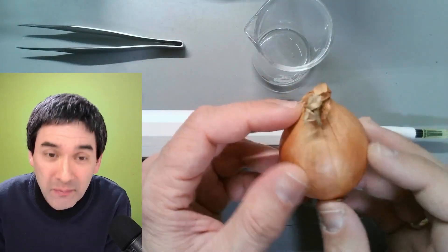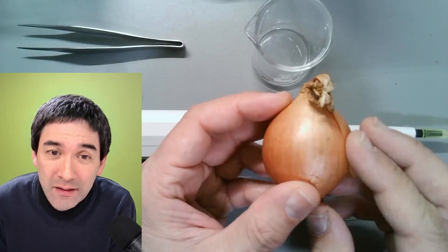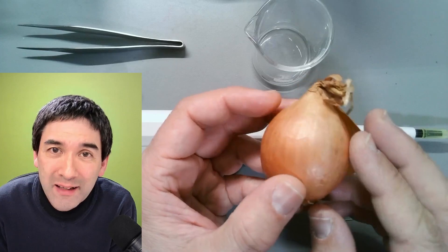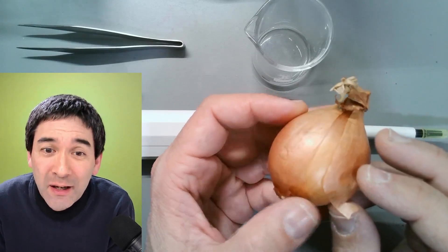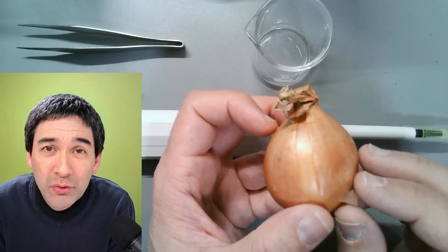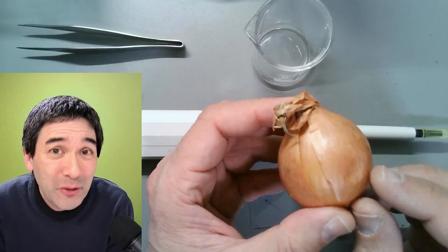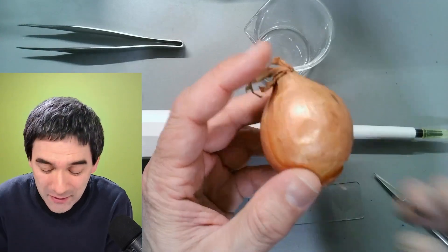I've got a little onion here and this brown paper-like outside, that is the tunic of the onion and it's somewhat water repelling. So if you actually were to use water then you're not going to get quite the results that you would like to expect.